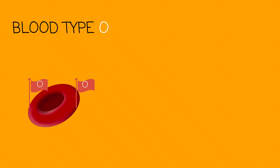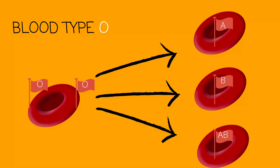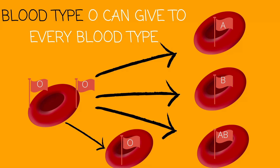Lastly, we're working with blood type O. O can give to everyone — O can give to A, O can give to B, O can give to AB, and O can give to O. It can give to everyone because it represents no one. It has no flags or antigens that will trigger other blood types to see it as a threat. Blood type O is known as the universal donor. That wraps up the compatibilities of giving blood.